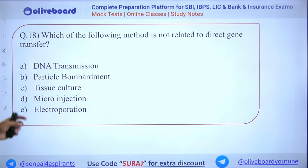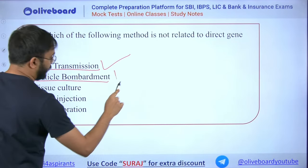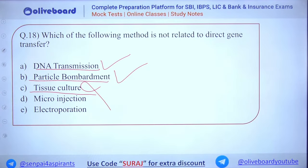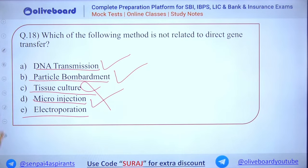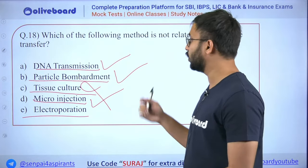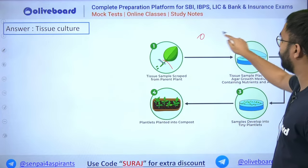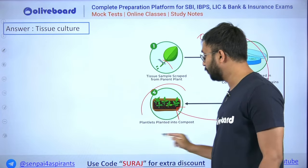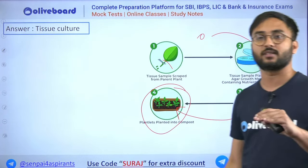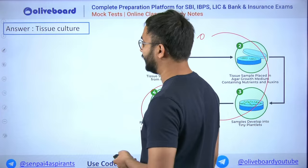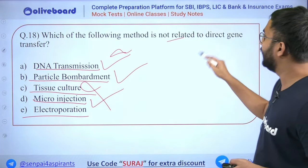Next: which method is not related to direct gene transfer — DNA transmission, particle bombardment, tissue culture, micro-injection, or electroporation? The answer is tissue culture (C). In tissue culture you cut a small tissue part of a plant and recreate a whole organism — it operates at tissue/cell level, not at the genetic/DNA level.